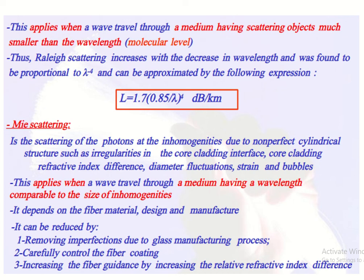In conclusion, scattering loss is mainly due to two major factors: composition fluctuation and inhomogeneities or defects in the fiber material. Scattering loss has two types: nonlinear and linear. Under linear, there are two types — Rayleigh and Mie scattering. Rayleigh scattering occurs due to refractive index variation and scatters light in all directions, while Mie scattering occurs due to inhomogeneities and scatters in forward or backward directions. Rayleigh scattering is reduced by increasing wavelength; Mie scattering is reduced by removing imperfections, controlling fiber coating, or increasing the refractive index difference.